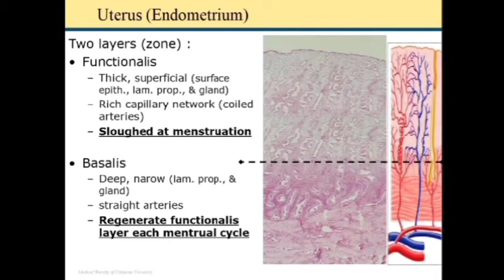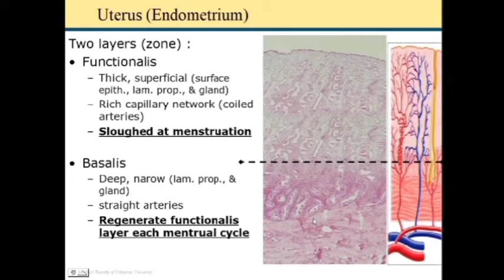The zona functionalis is the portion which is sloughed off at the time of menstruation. The zona basalis is the deep narrow layer just below the zona functionalis. It consists of deep narrow lamina propria and glands, with straight arteries. It regenerates the functionalis layer after each menstrual cycle.